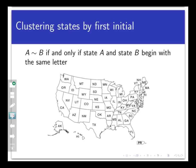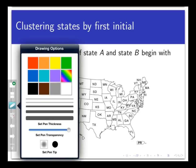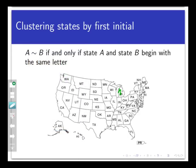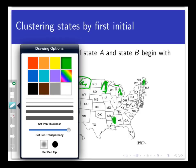Let's use the map here on the screen to color code states according to whether they are equivalent or not. For instance, I'm going to color Michigan, Minnesota, Montana, Mississippi, and Maine all the same color because they are all equivalent to each other. I also need to color Washington, Wyoming, Wisconsin, and West Virginia all the same color because they are all equivalent to each other as well.